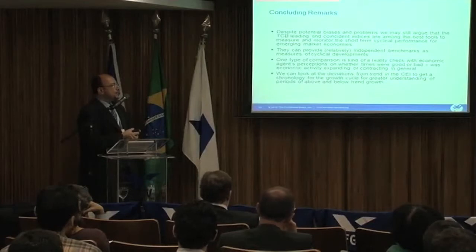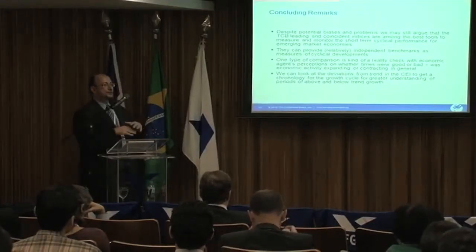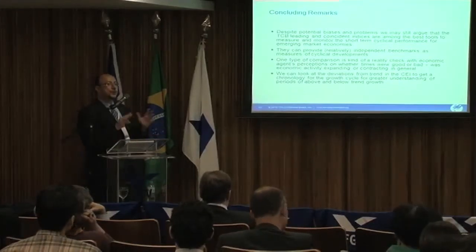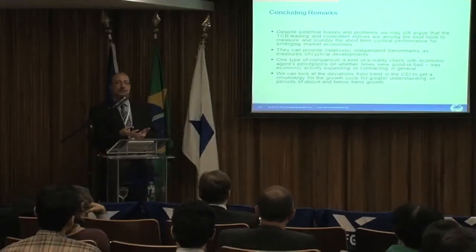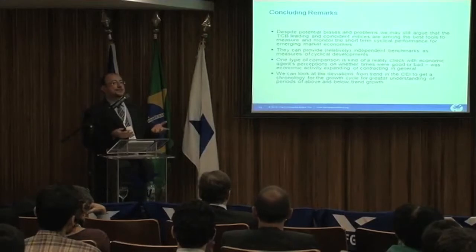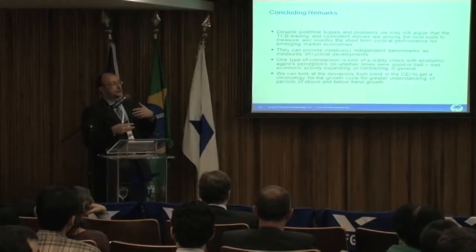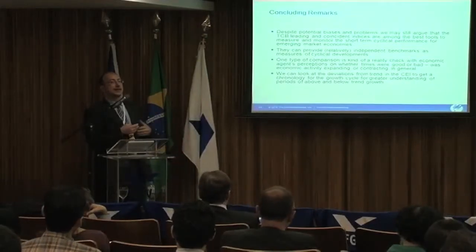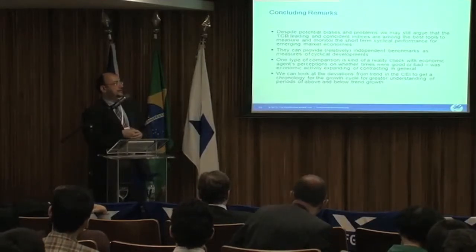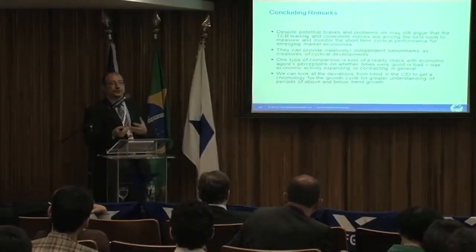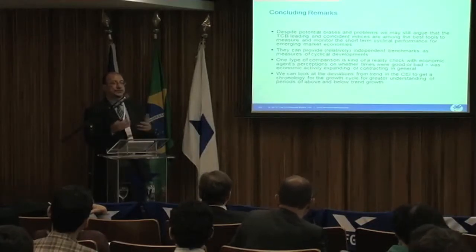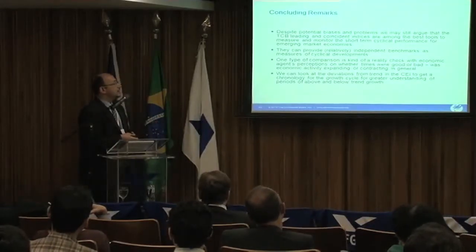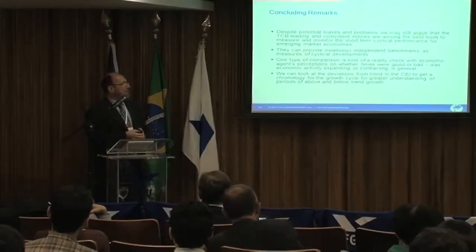The Business Cycle Indicator approach gives you a systematic framework to organize a lot of data and summarize it with composite indexes, helping to frame the discussion about what the business cycle looks like and how it evolves over time. Once you have these metrics, you can do historical comparisons — how is this business cycle or growth cycle different from past cycles? — and inter-country comparisons on issues like synchronization, convergence, divergence, or regional cycles.